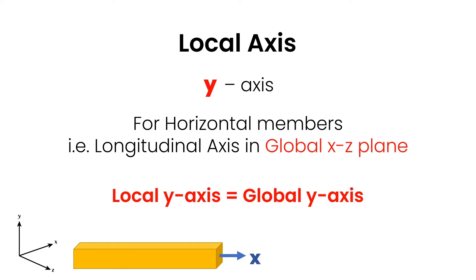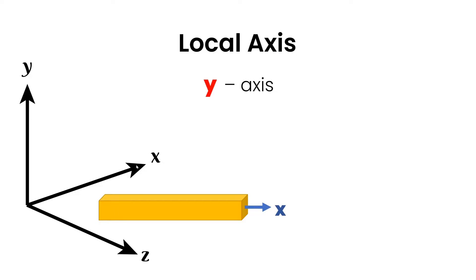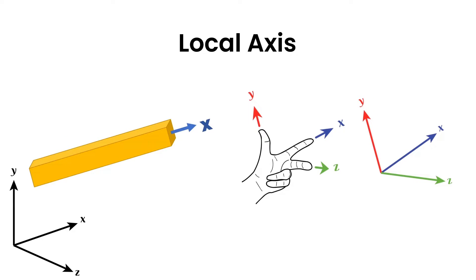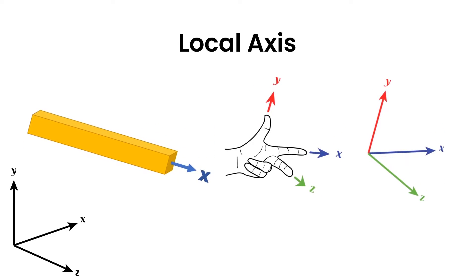Moving on to the Y axis — the cases are a bit different here. For every horizontal member that is in the global XZ plane, the local Y axis and the global Y axis will be parallel or in the same direction. For example, if you have a member along the global XZ plane — you can change the orientation but it remains horizontal — in such a case the local Y axis is parallel to the global Y axis. The X and Z may change depending on member orientation, but this Y will remain the same. When in doubt, use the left-hand rule. So the longitudinal axis is always the local X axis, and depending upon the change in direction, you can change your left-hand orientation to find the local axis. With this much theory, let's get into StatPro and try finding it out there.